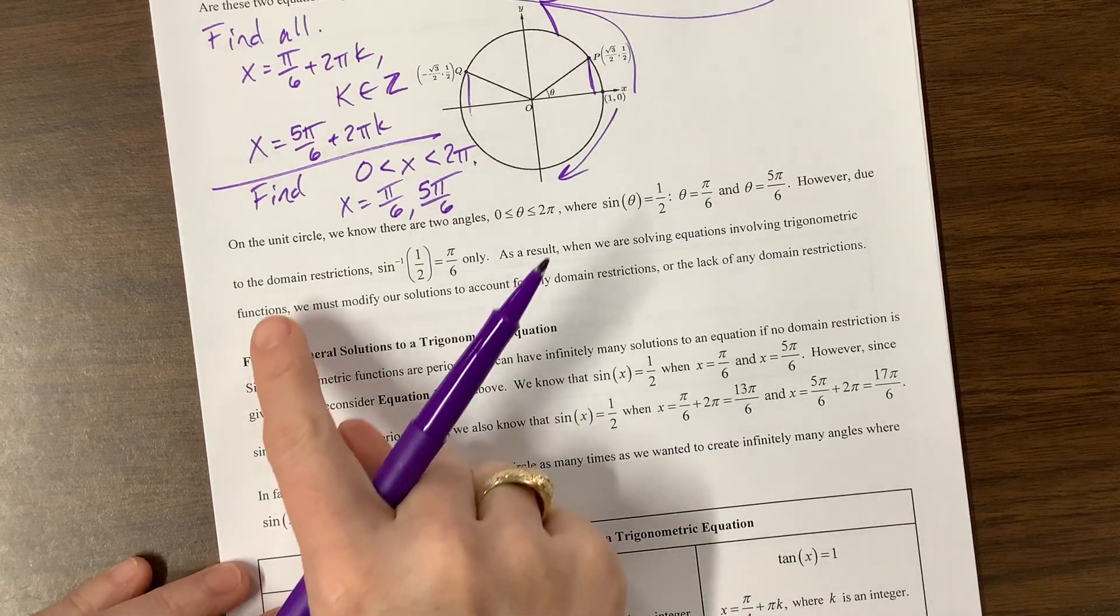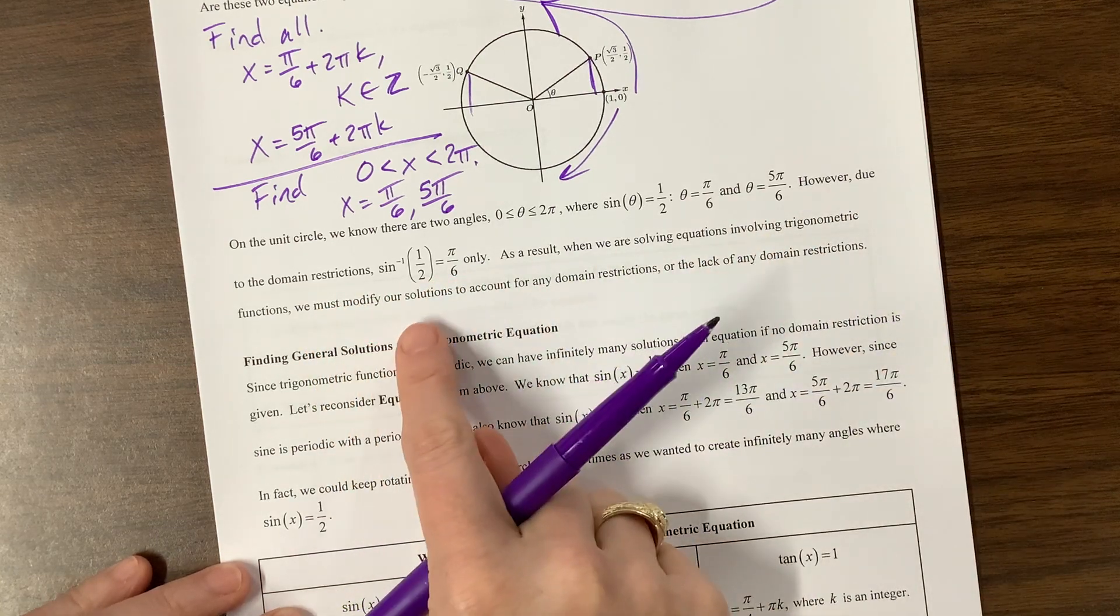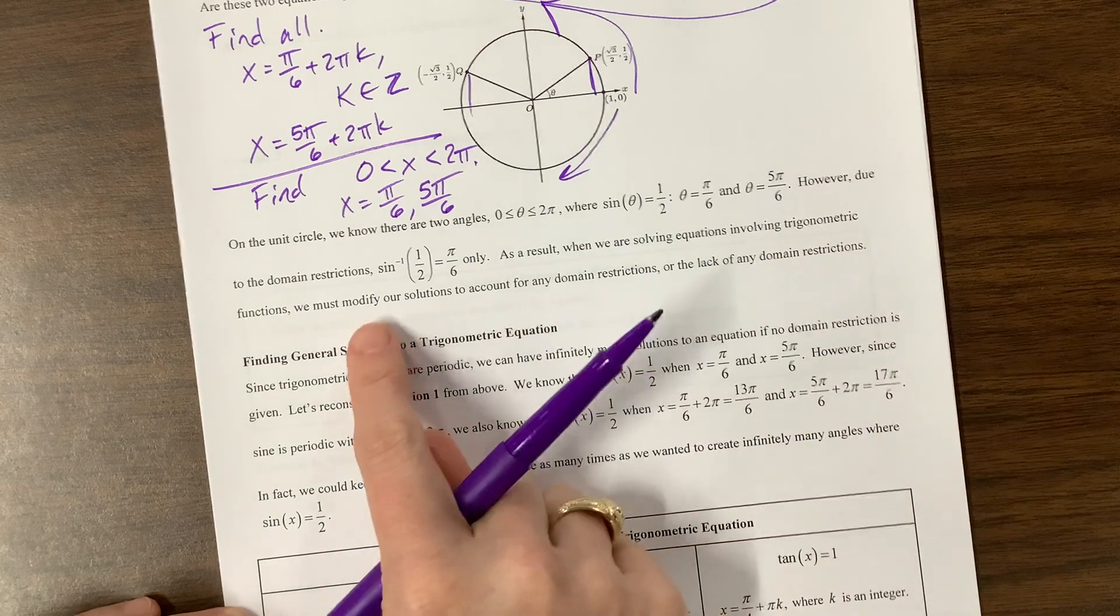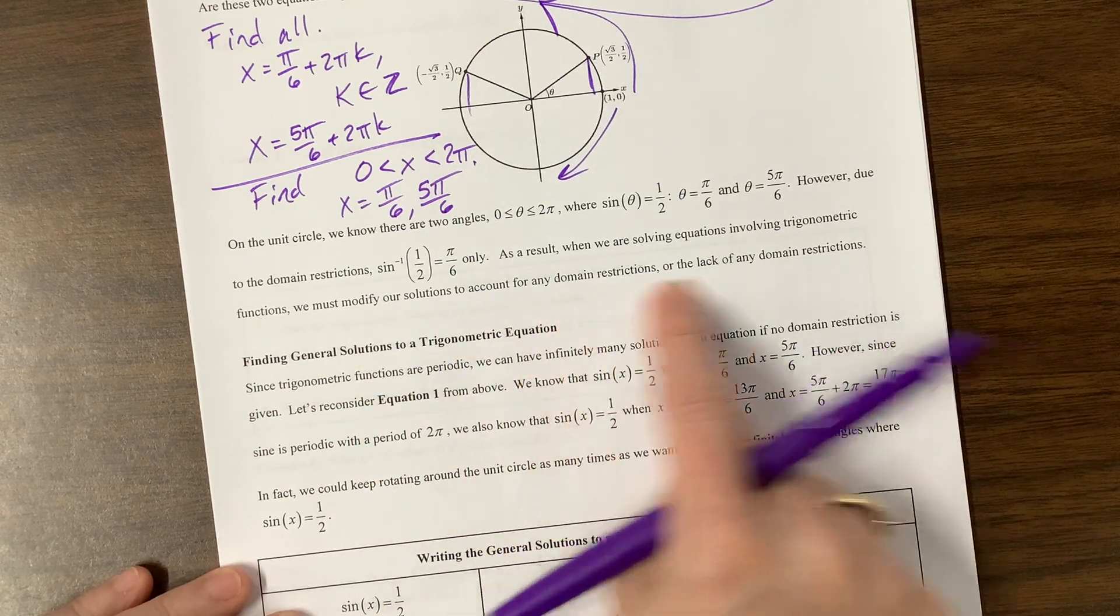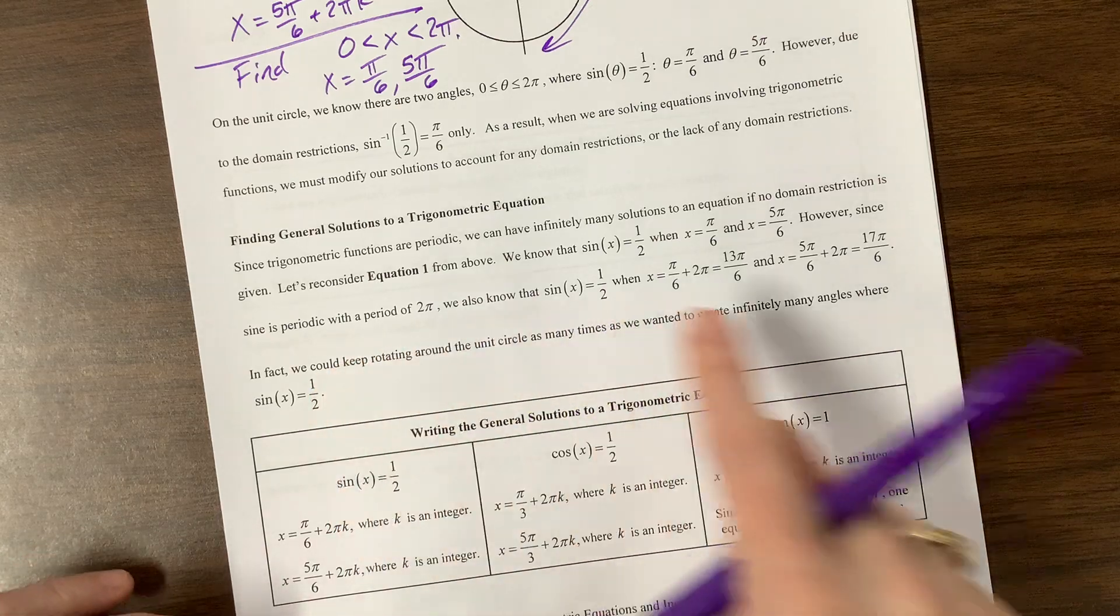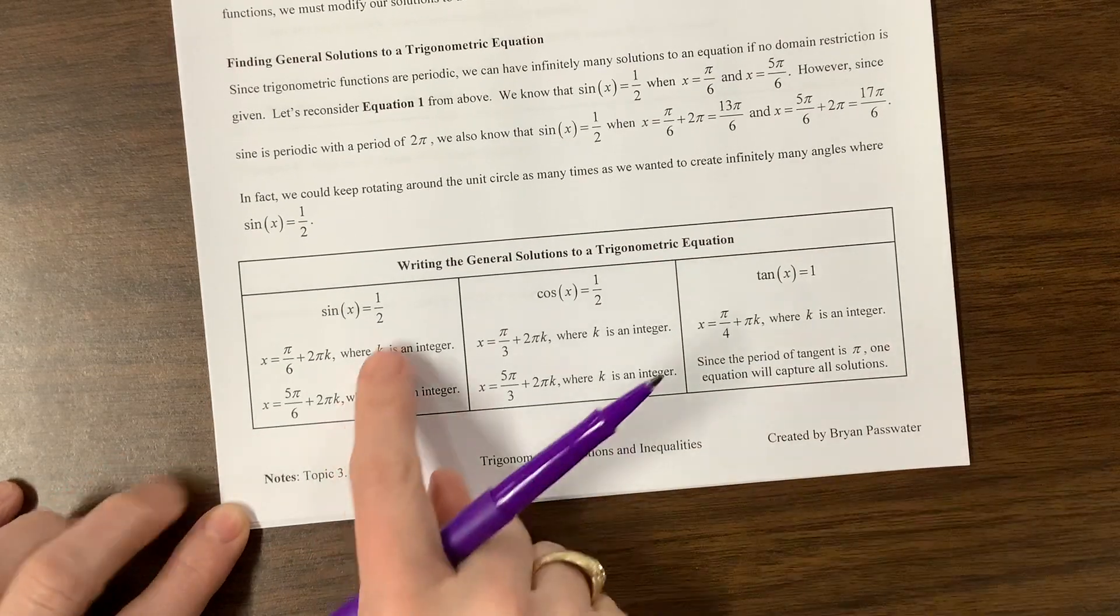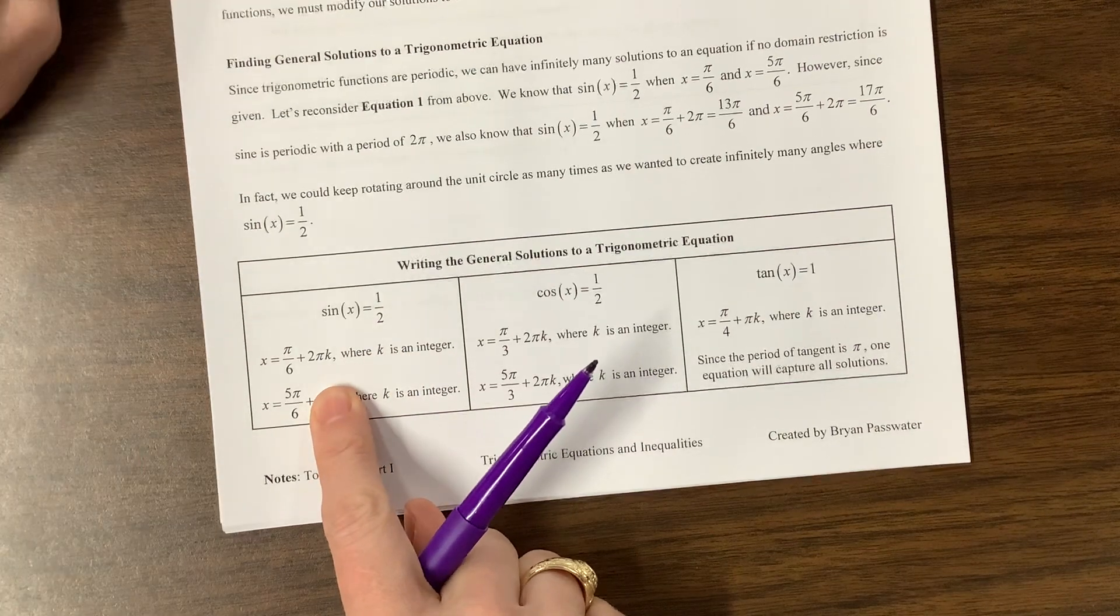Okay, let's see. And the inner circle, however, due to the domain restrictions, is that only. As a result, we are solving equations using trig functions. We must modify our solutions to account for any domain restrictions or lack of domain restrictions. Since they're periodic, oh look, he did all the stuff that we're going to do.